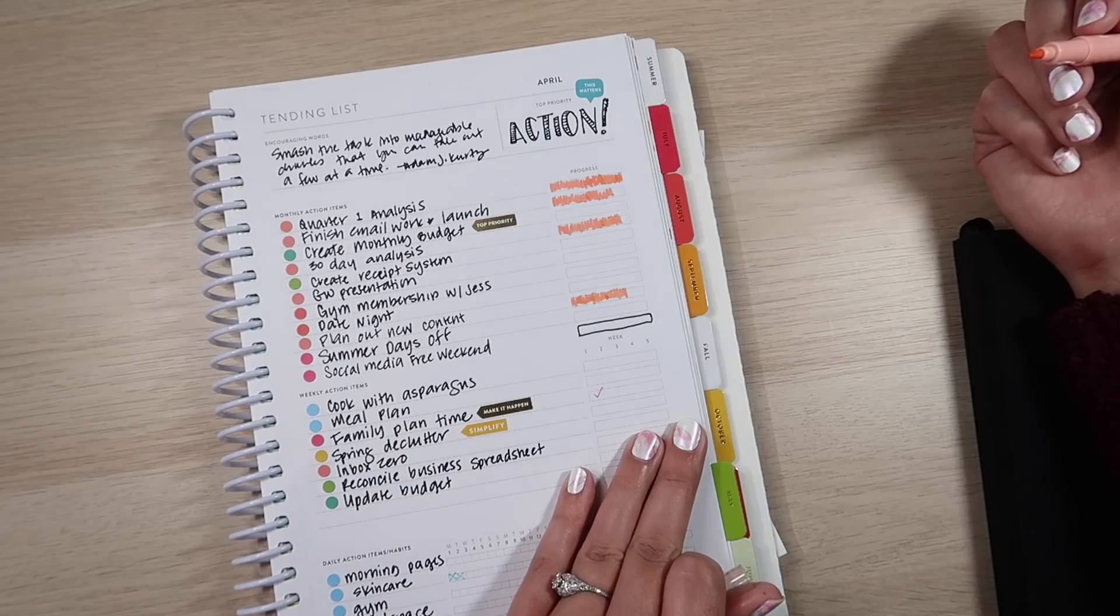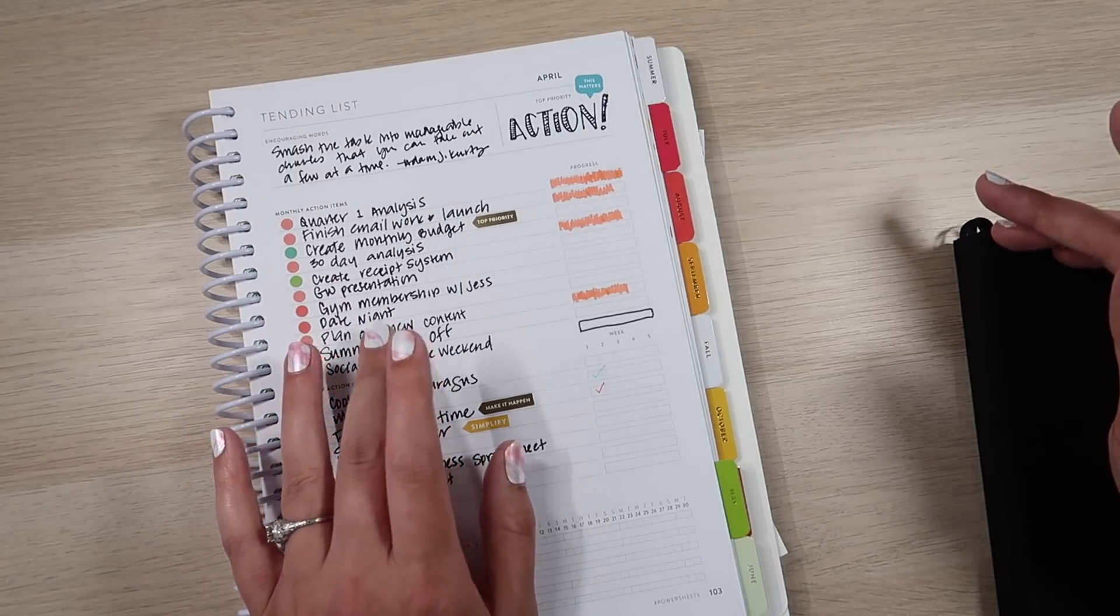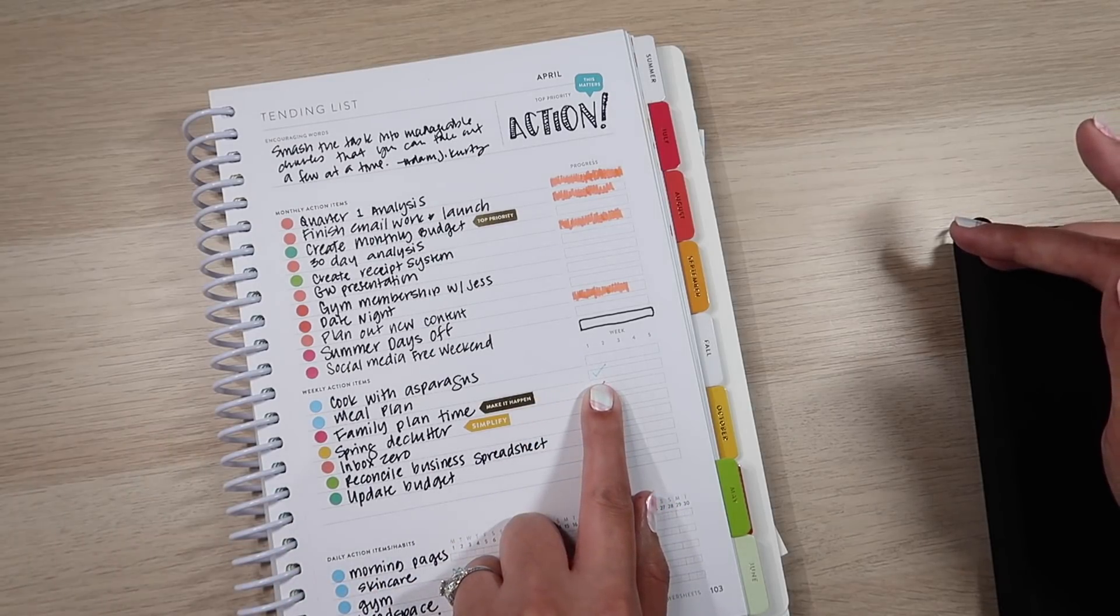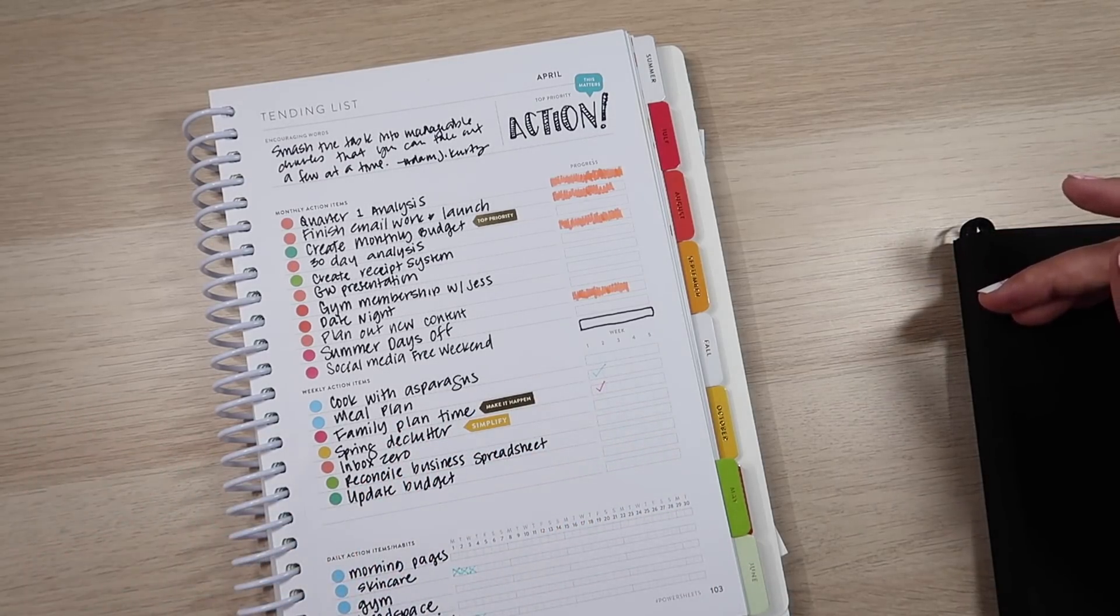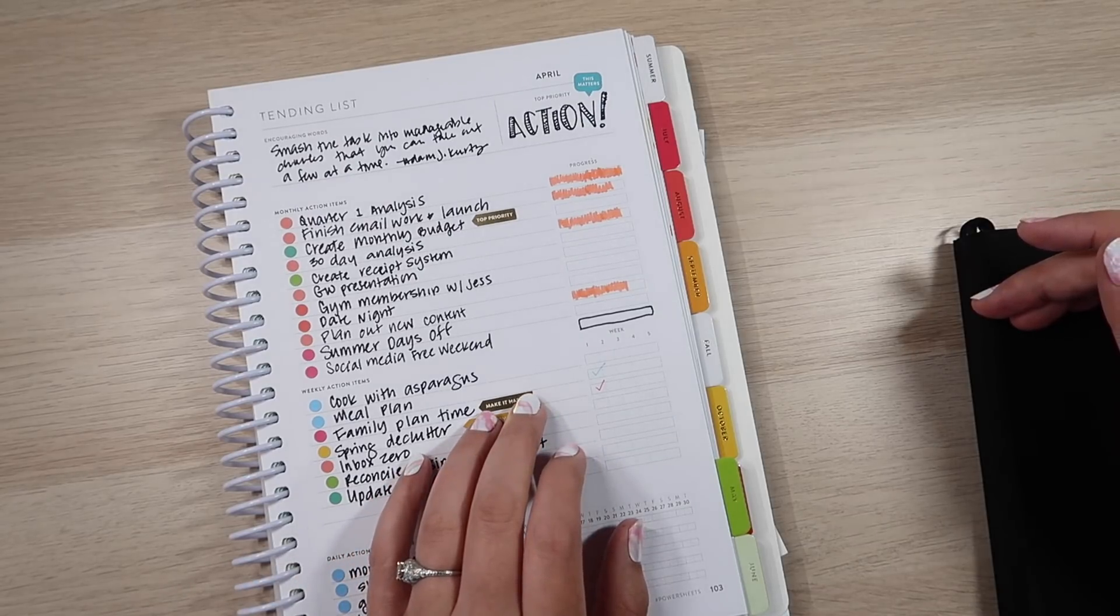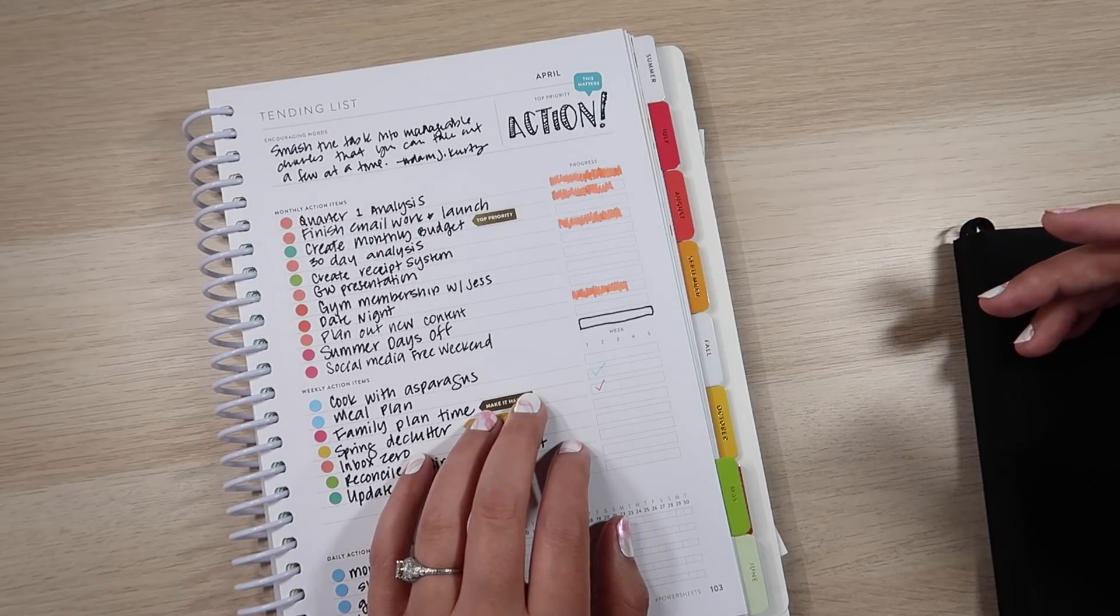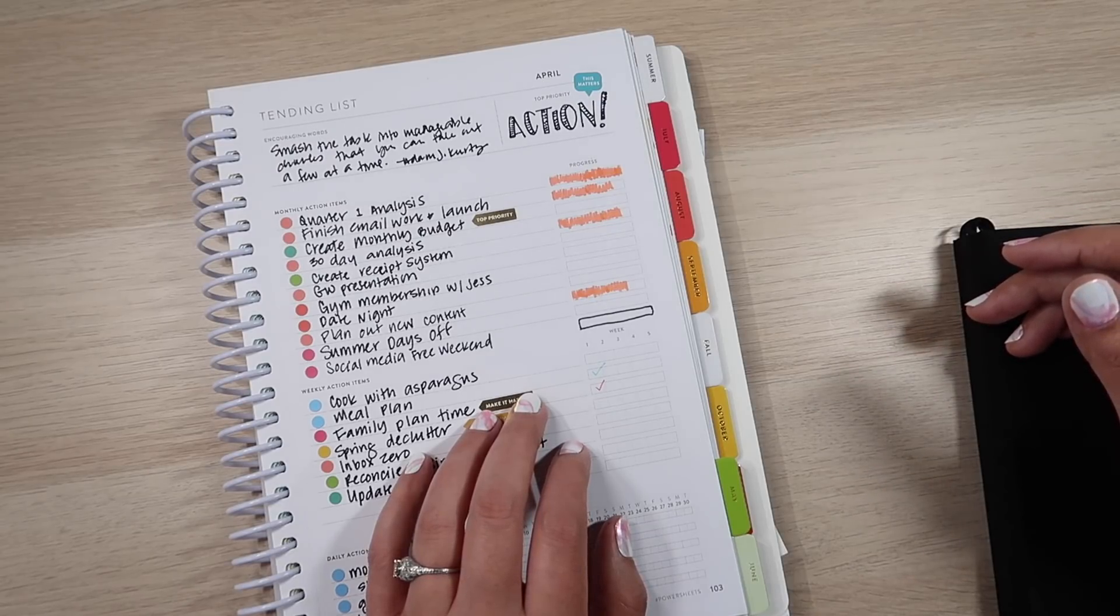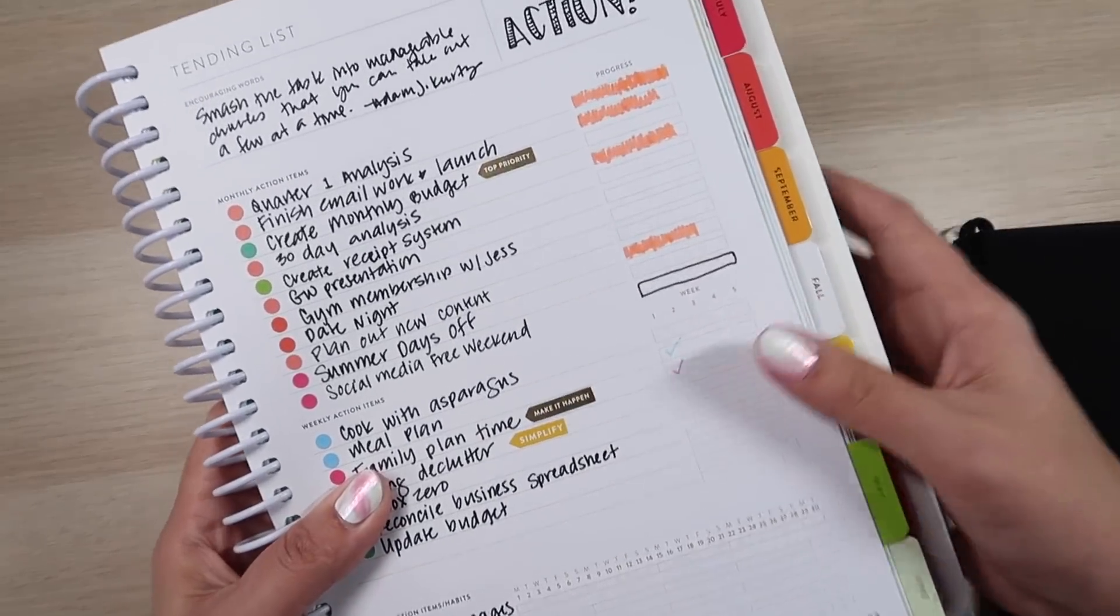I finished my quarter one analysis yesterday. I did more work on this. I did a lot more planning, which was great. I'm almost done with my 30 day analysis. I meal planned, which was not something I had on the schedule for yesterday. I was so nauseated yesterday in the afternoon that I decided I wasn't going to cook. I just ate some soup and my husband found something in the fridge.